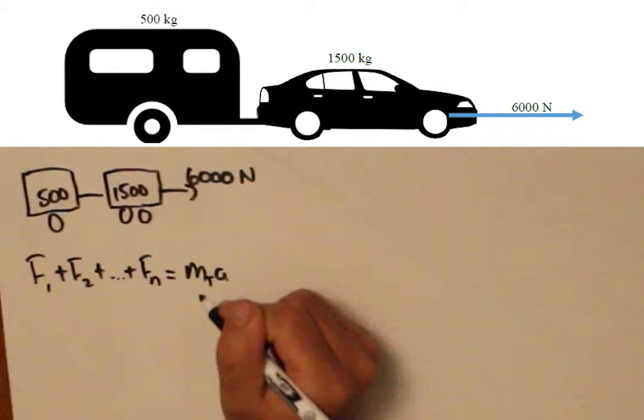To find the acceleration, we consider the system as a whole and look at the external forces acting on the system. We can disregard the weight force because it is balanced by the normal reaction force. Therefore, we only have one force contributing towards its motion, the 6000N driving force.